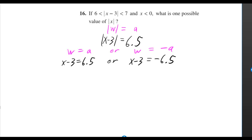We can use the formula that the absolute value of whatever is equal to a number, then whatever is equal to a number or whatever is equal to negative of a number. Whatever in our case is x minus 3, the number is 6.5. So x minus 3 is equal to 6.5 or x minus 3 is equal to negative 6.5.